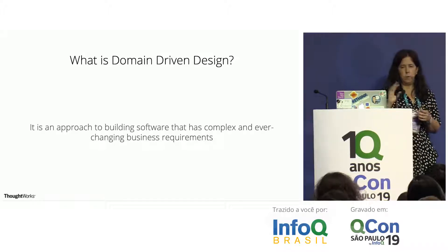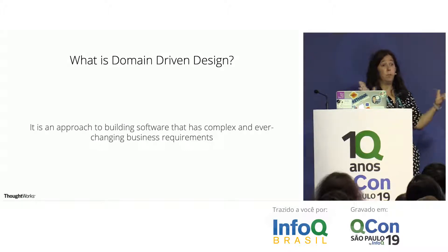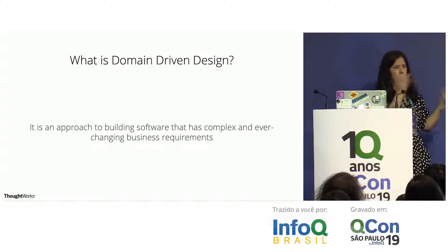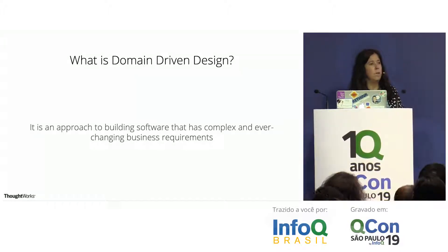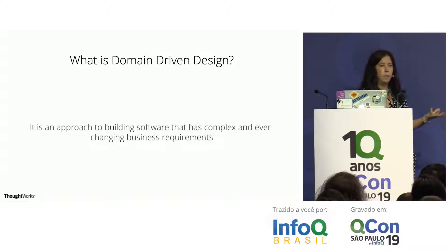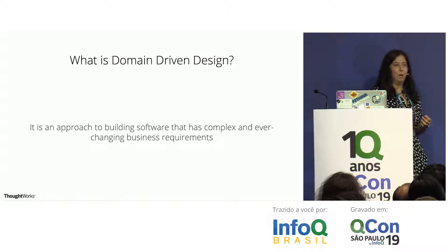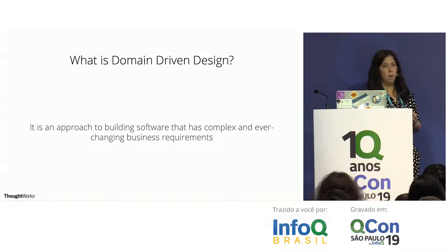Domain-driven design talks about the concept of a domain — basically the activity that an organization does, such as finance, health, or retail. Subdomains are abstractions that describe a select aspect of that domain; for example, in finance, subdomains could be payments, statements, or credit card applications. A ubiquitous language is the language we use to talk about things that happen in a subdomain. And a bounded context defines explicit boundaries within which a subdomain exists and where that language is used.